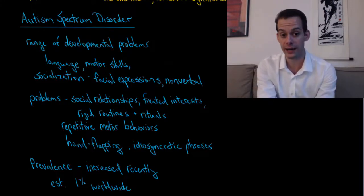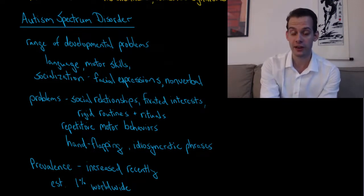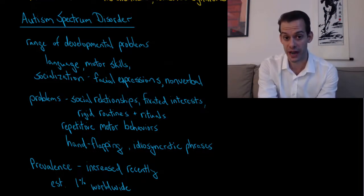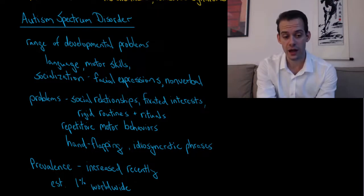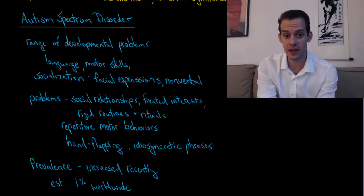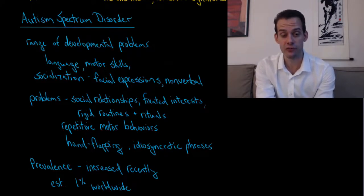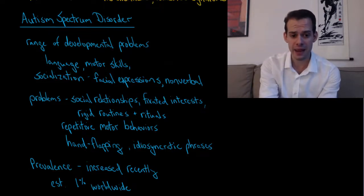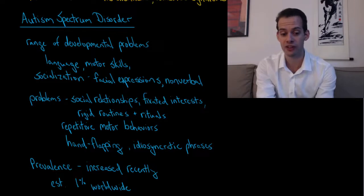These include problems related to language, motor skills, and socialization, such as difficulty recognizing facial expressions or expressing nonverbal communication cues. Children with this diagnosis may show problems with social relationships, hyper-focus on certain things called fixated interests, a tendency to prefer rigid routines and rituals, becoming upset when those are violated, and engaging in repetitive motor behaviors such as hand flapping or repeating idiosyncratic phrases.